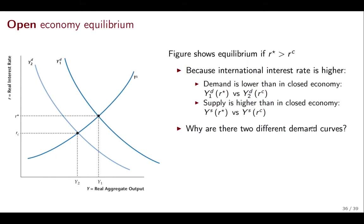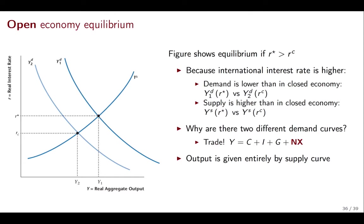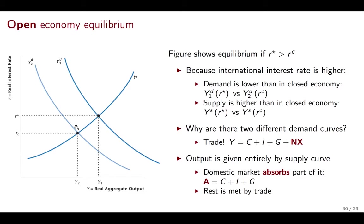Why are there two different demand curves — why do we need Y2 and Y1? Y2 is what's going to happen in the closed economy; Y1 is what's going to happen in the open economy. The difference is straightforward: in the open economy, you have to add net exports to total demand. Output is given entirely by the supply curve — the opposite of the Keynesian model where output was given entirely by the demand curve. The domestic market is going to absorb part of output, and the rest is going to be met by trade. The second demand curve is shifted up or down as required to restore equilibrium in the goods market, so international trade guarantees that the goods market clears by adding exports or subtracting imports as needed.